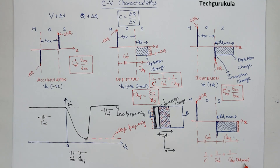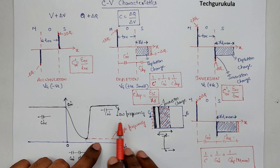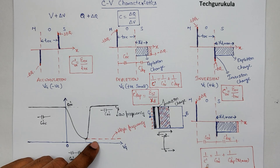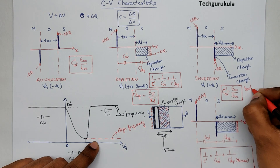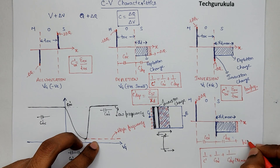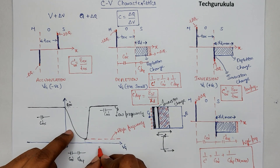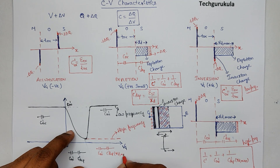Make a note: this is for X_d max distance. So for low frequency, you have C_ox prime in inversion. And for high frequency, the capacitance is C_ox prime in series with C_depletion prime at X_d max. This is the low-frequency curve and this is the high-frequency curve for the CV characteristics.